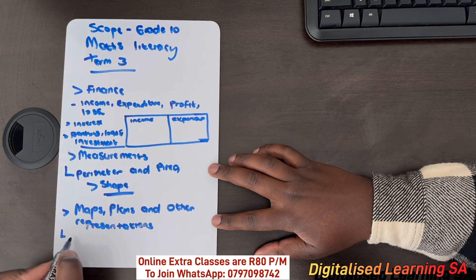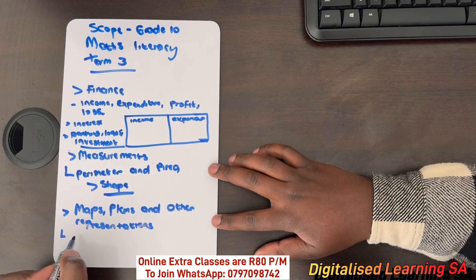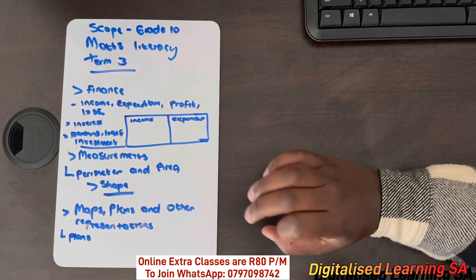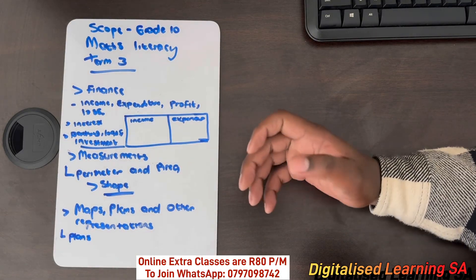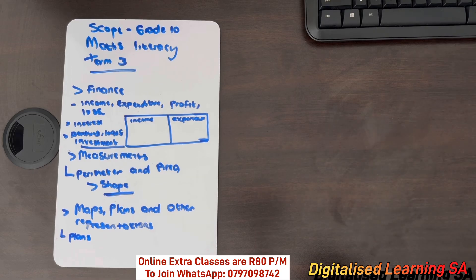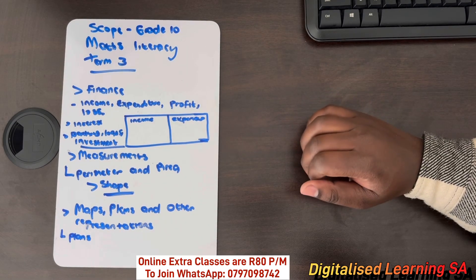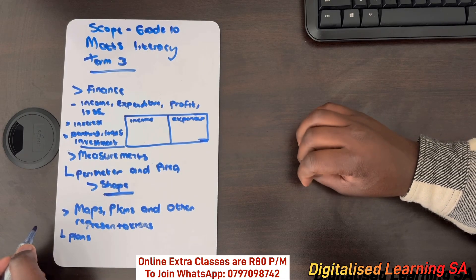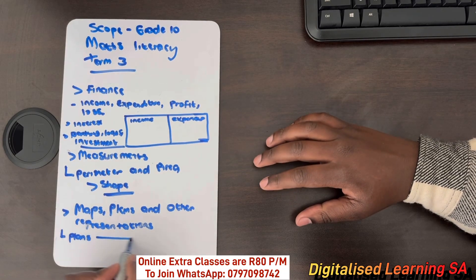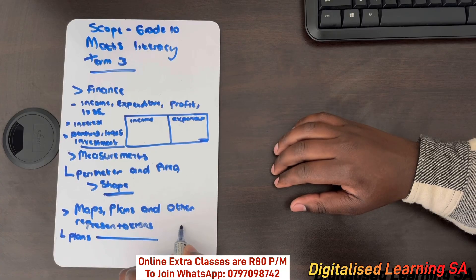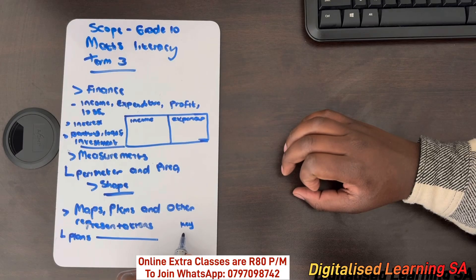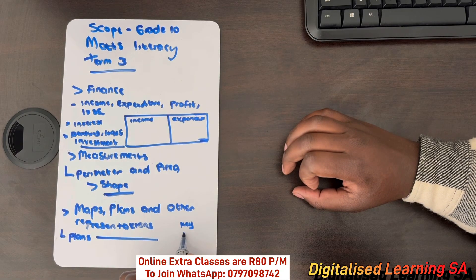Here, you'd find that we are given, let's say, plans. Once we are given a plan, you'd find that we are given a set of questions that we will need to answer based on the plan or plans that we are given. In most cases, when we are given plans, you'd find that we are given a key showing what you will be seeing on the plan.